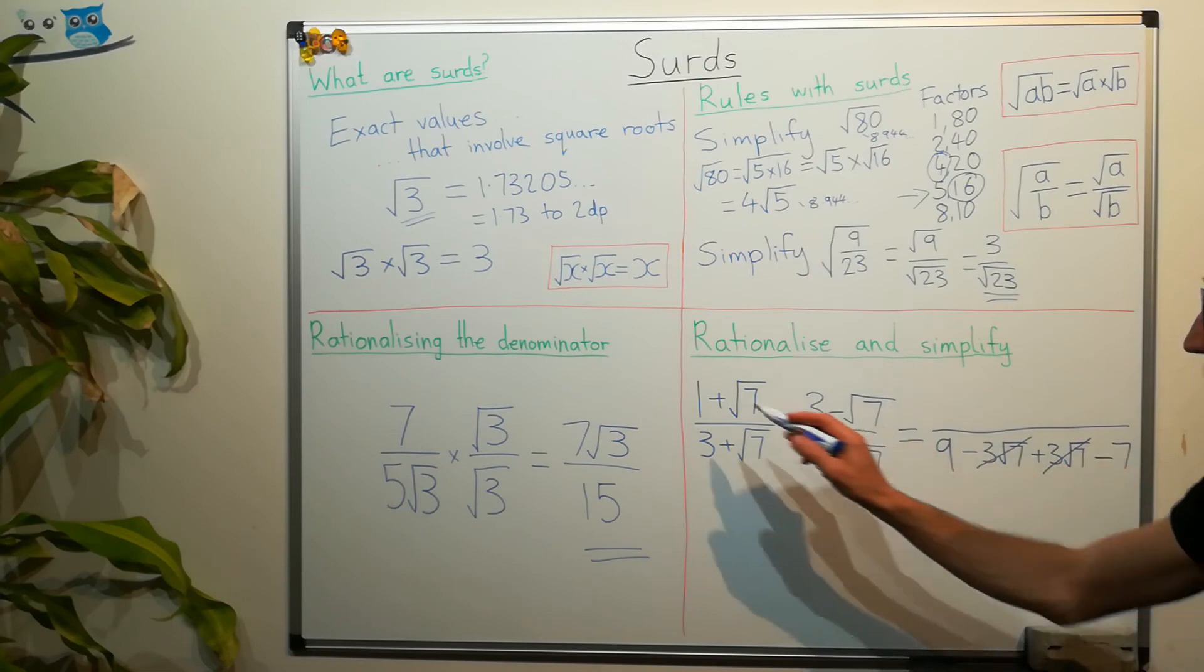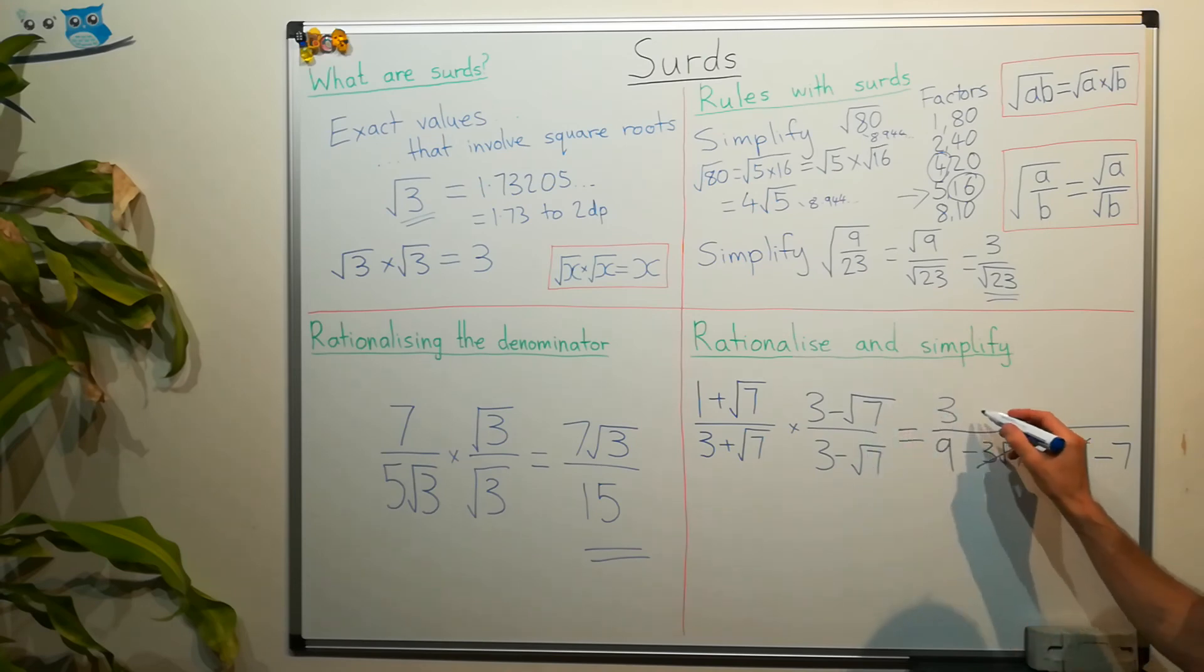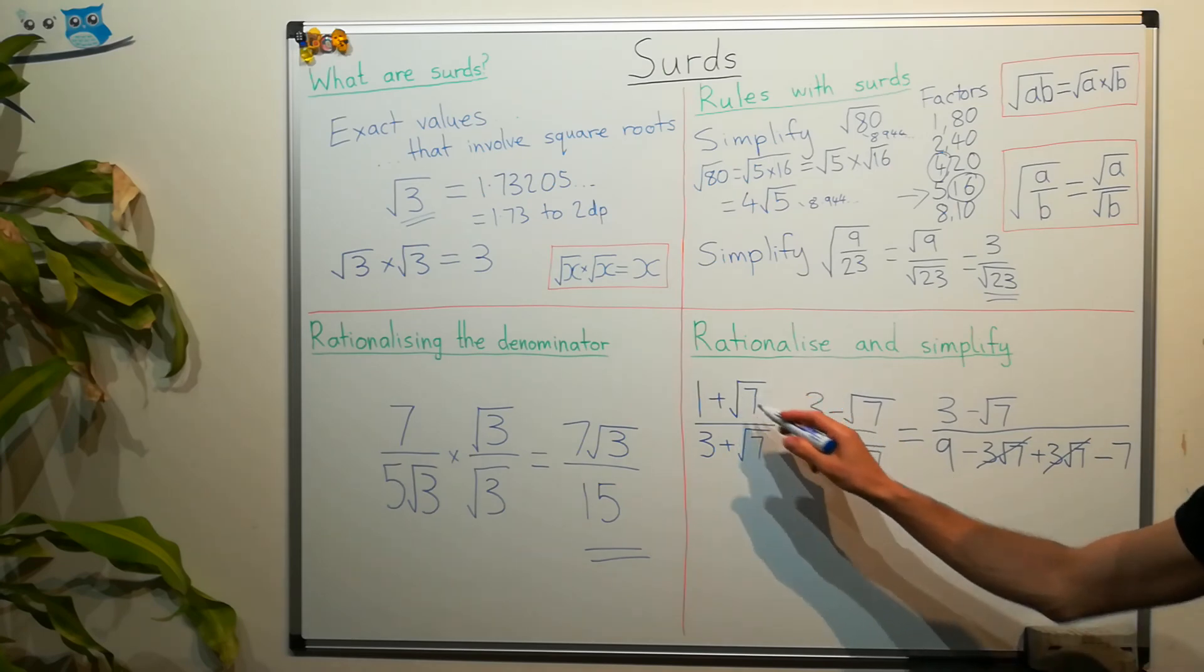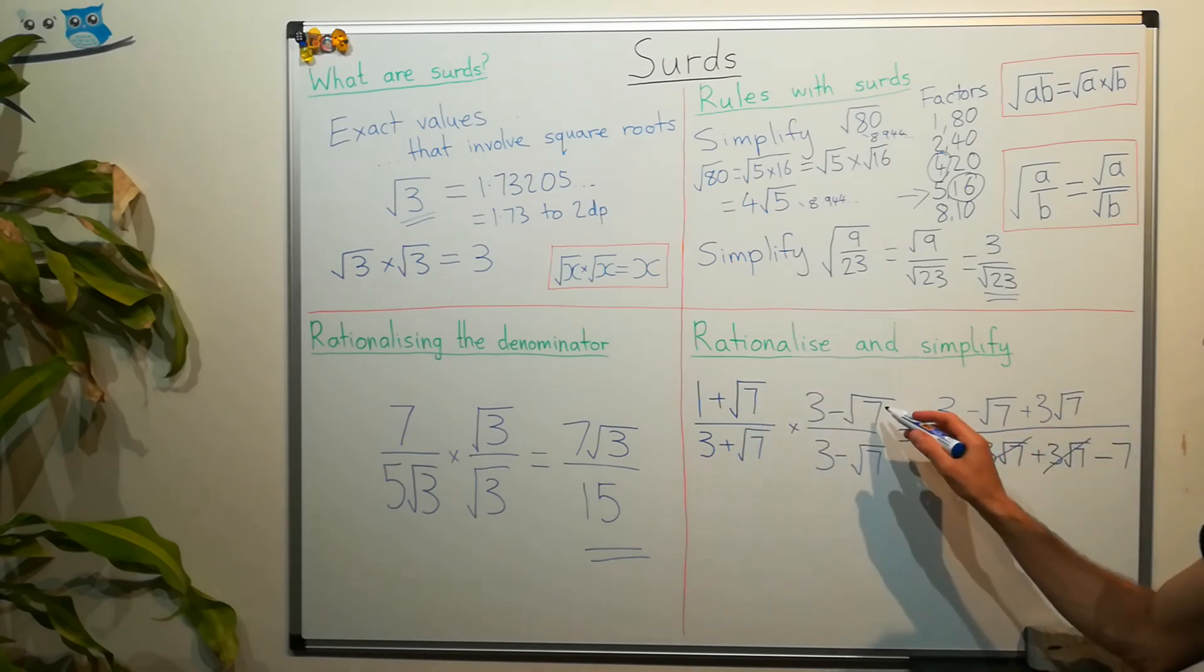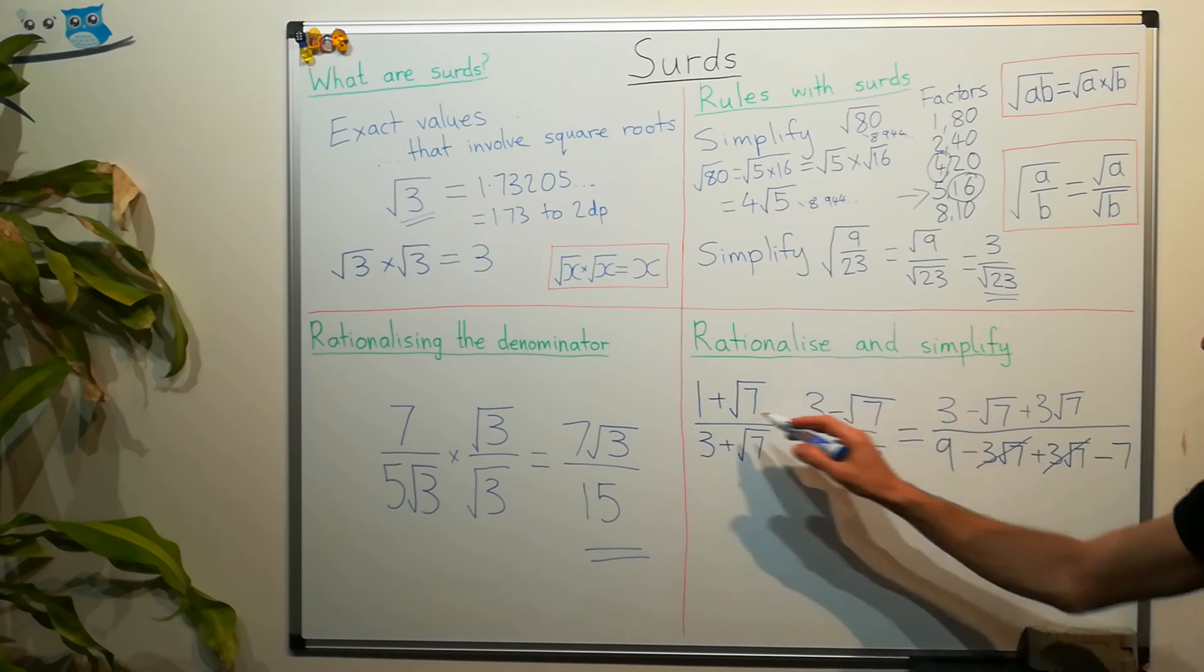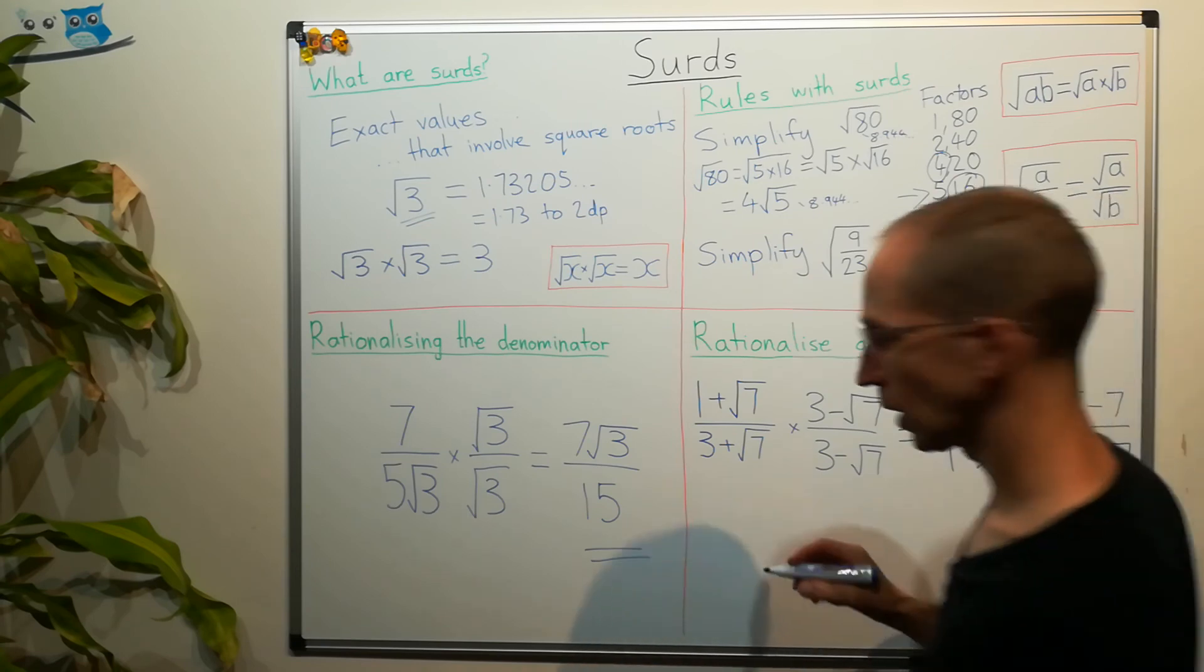Now, on top, we've got 1 times 3, which is 3. 1 times minus root 7 is just minus root 7. Now, we've got root 7 times positive 3, so that's plus 3 root 7. And root 7 times root 7, well, what we saw before, that's equal to 7. Positive and negative, so that's going to be negative 7. Okay. Now, we can tidy this up.